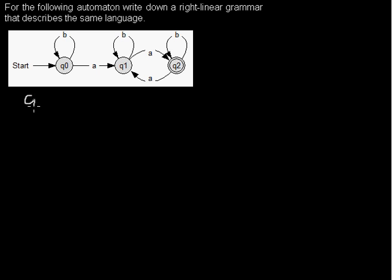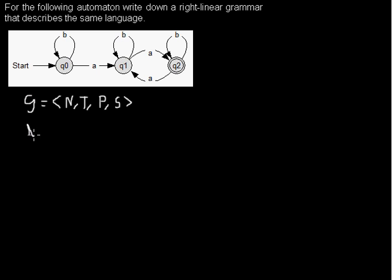If you remember, a grammar consists of non-terminals, sometimes called variables, terminals, some production rules, and a start symbol. In this method, when we have the set of non-terminals, we say that the set of non-terminals is just the set of the states in the automaton.